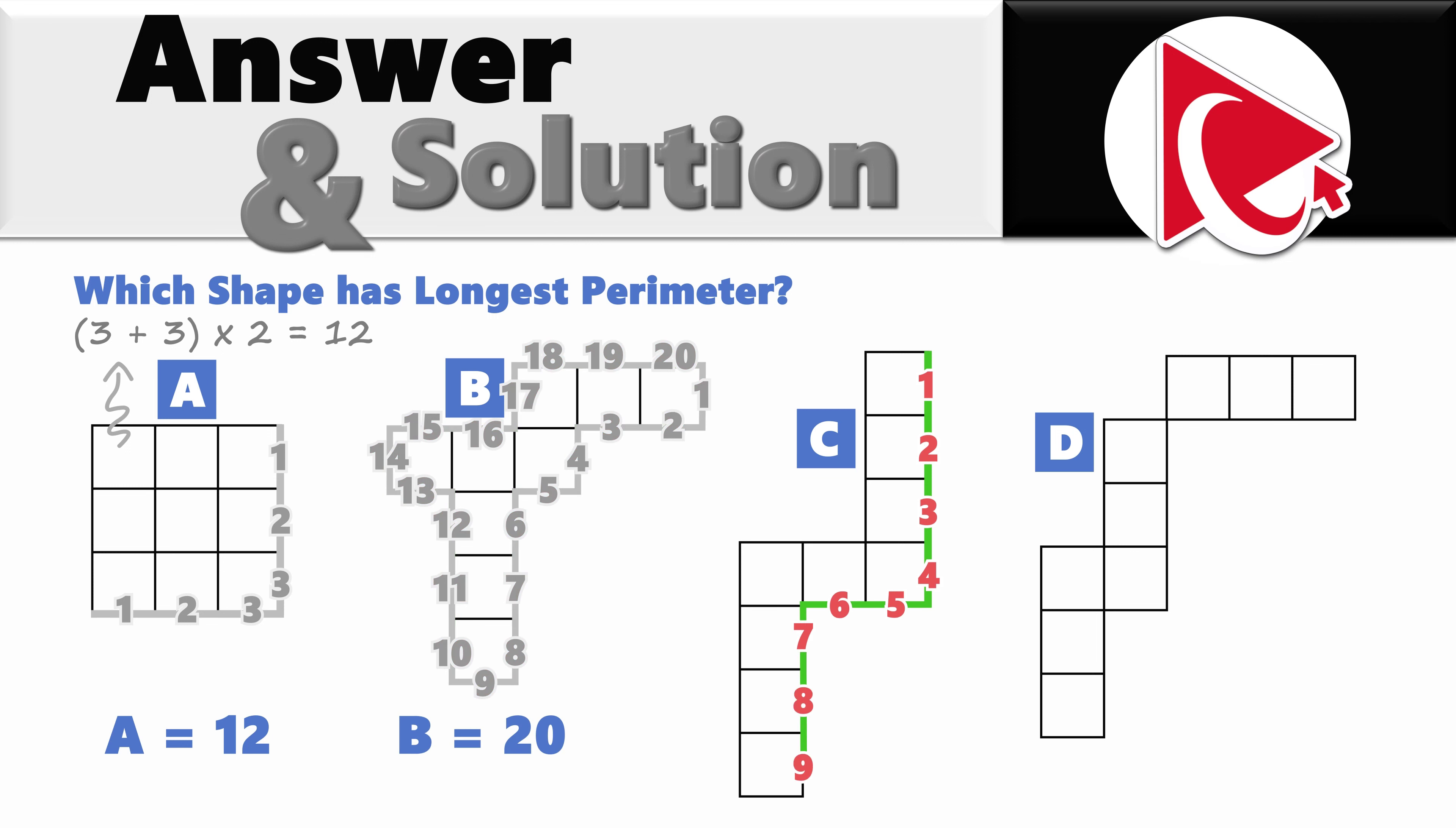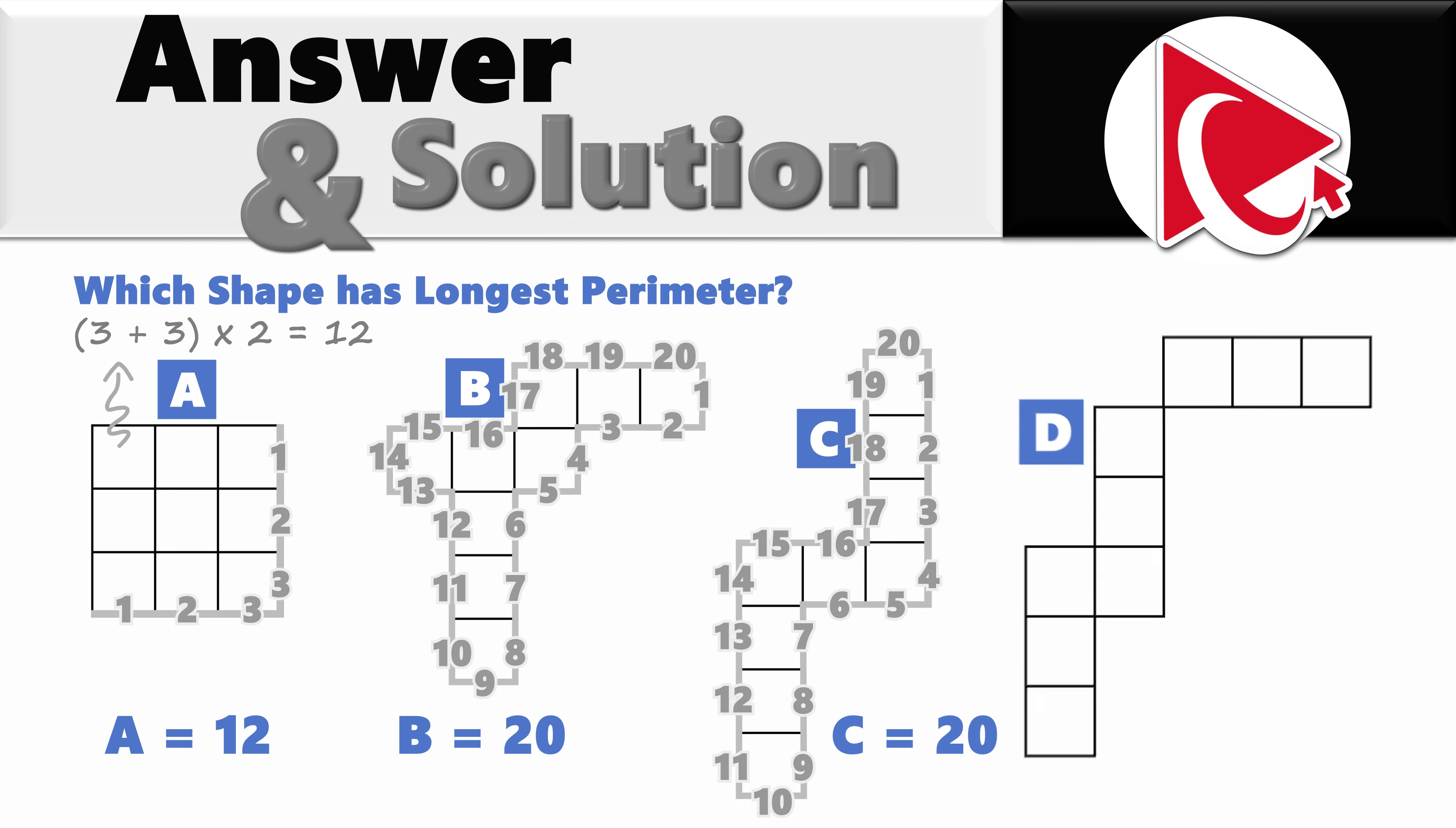Same thing is for shape C. But shape D is different. Let's do the math: 1, 2, 3, 4, 5, 6, 7, 8, 9, 10, 11, 12, 13, 14, 15, 16, 17, 20, 21, and 22. Which means that shape D's perimeter is the longest with 22 units. So the correct answer here is choice D.